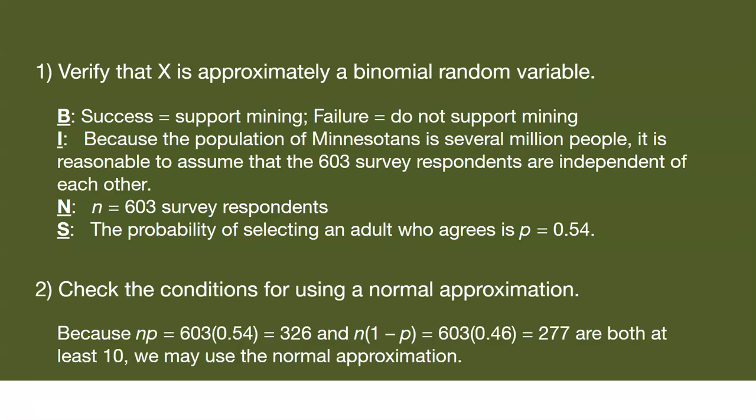Because n times P is 603 times 0.54, that equals 326, and n times 1 minus P equals 277. Both are at least 10, so we can use the normal approximation for this survey data example.